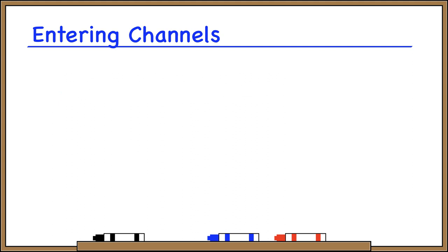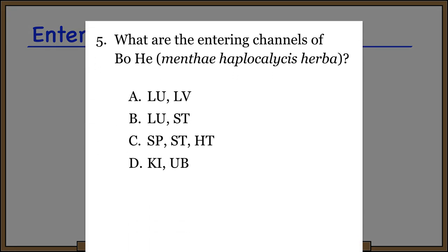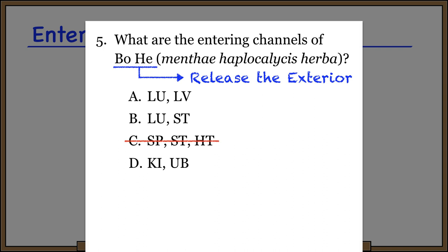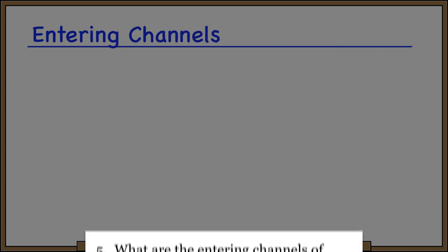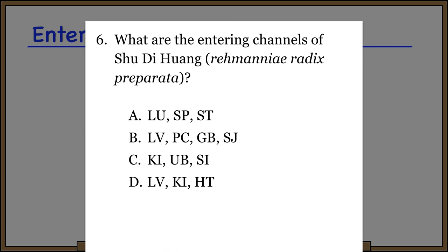Rather than thinking of entering channels as extra information to memorize, try to make a connection between an herb's functions and its entering channels. Suppose you get the question: what are the entering channels of Bo He? Bo He is in the category herbs that release the exterior, so it probably enters the lung channel — cross out anything without the lung. If you remember that Bo He also brightens the eyes and moves liver qi, you can guess it also enters the liver channel. For Shu Di Huang: it's in the category tonify blood, so it enters the liver channel, and it also tonifies kidney yin, so there's only one choice that has both liver and kidney.